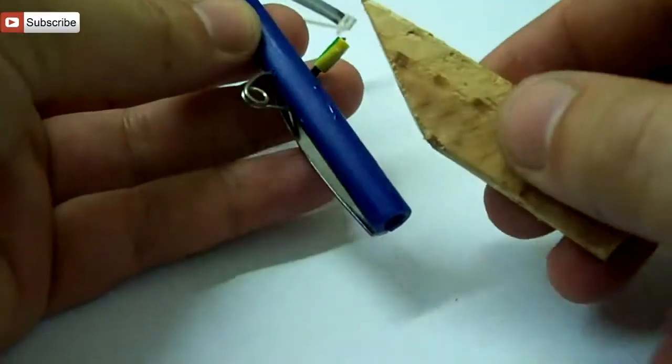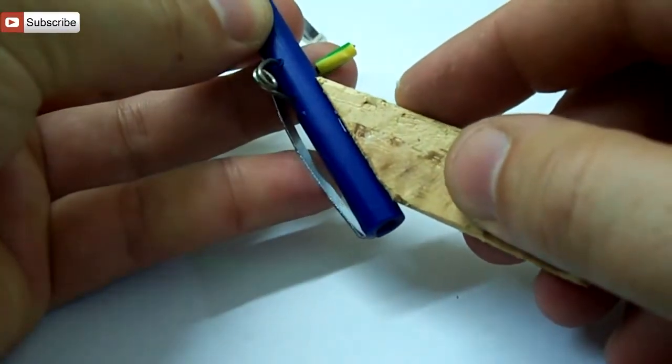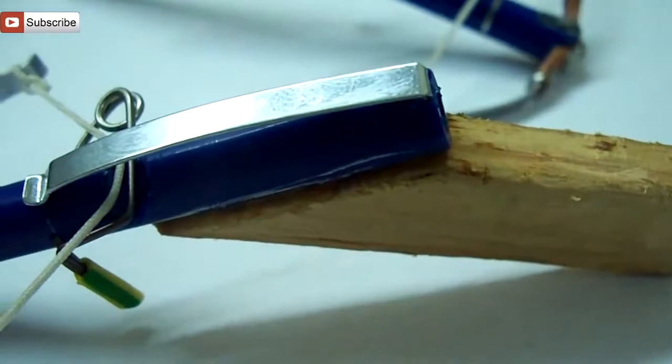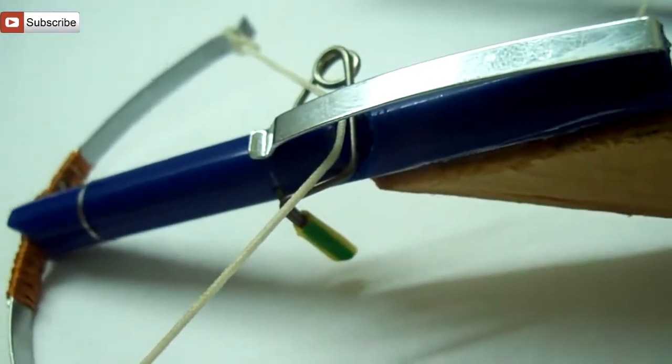The handle is a small piece of wood that is fixed with glue. Leave it a couple of minutes to dry, and the mini crossbow is finished. Now we can shoot some targets.